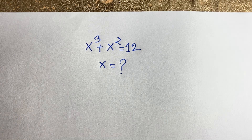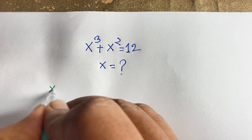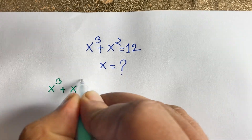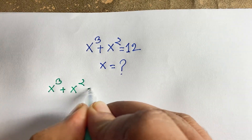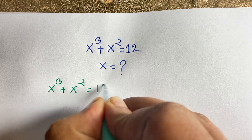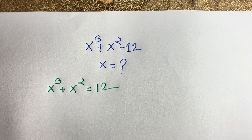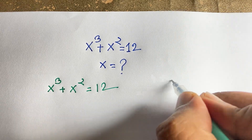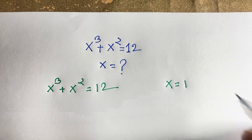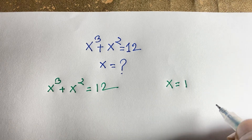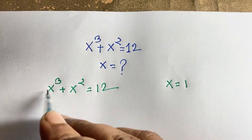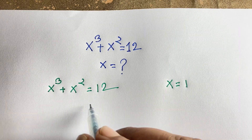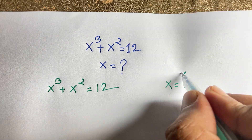So, our question is x to the power 3 plus x squared is equal to 12. Now, if you think x is equal to 1, you can easily check: 1 squared plus 1 is not equal to 12. So x equals 1 is rejected.